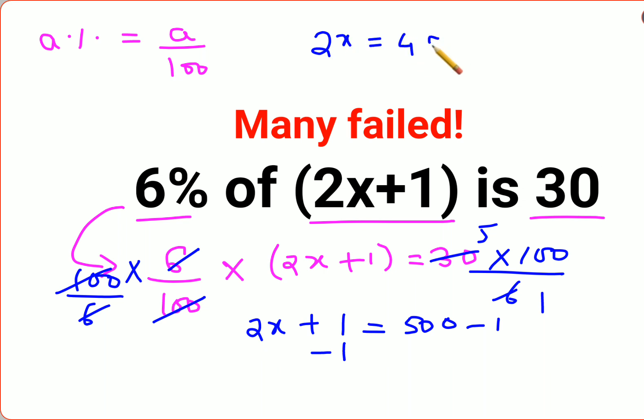In order to find the value of x you will divide both sides by 2. So this gets cancelled, and 499÷2 = 249.5. So the value of x for this particular question is 249.5.